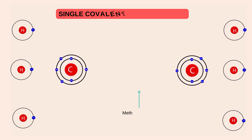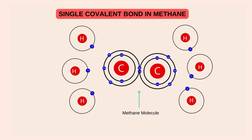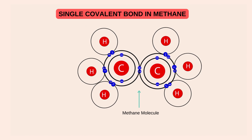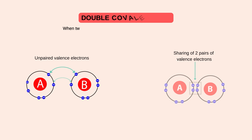Single covalent bond ki aakhri example methane molecule ki hai. Methane molecule, jis se CH4 se represent kiya jata hai. Is mein carbon atom, as we all know, its atomic number is six and it has four electrons in its valence shell. Stability achieve karne ke liye carbon ko mazeed 4 electron ki zarurat hai. Apne is 4 electron ki zarurat ko mukammal karne ke liye, carbon 4 hydrogen atom se single covalent bond banata hai, aur methane molecule mein convert ho jata hai.